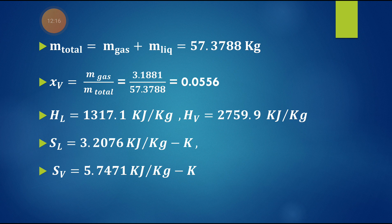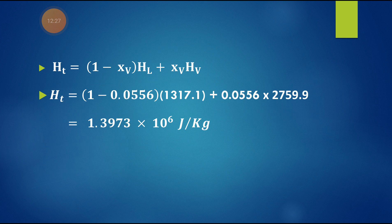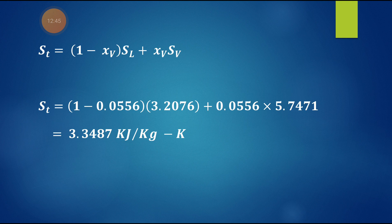Taking the values of HL, HV, SL, and SV from the steam tables and substituting into the equations, we calculate total enthalpy Ht and total entropy. The total entropy is calculated as 3.3487 kJ/kg·K. In this way, we can calculate the total enthalpy and total entropy for the two-phase system.